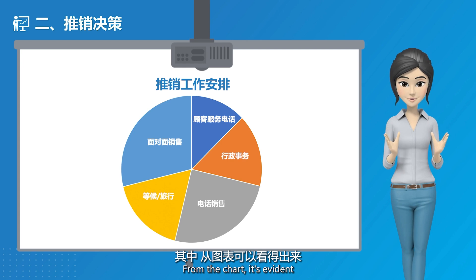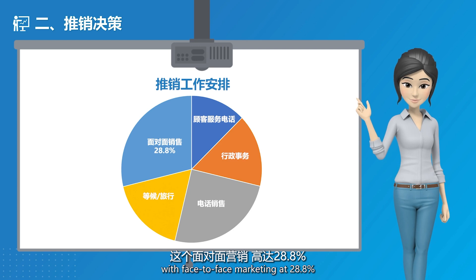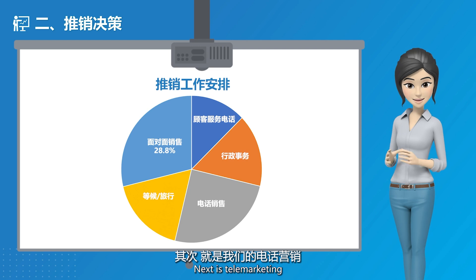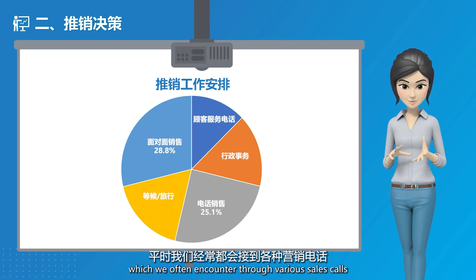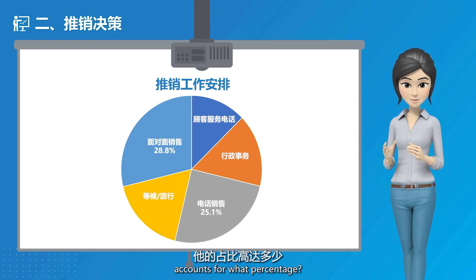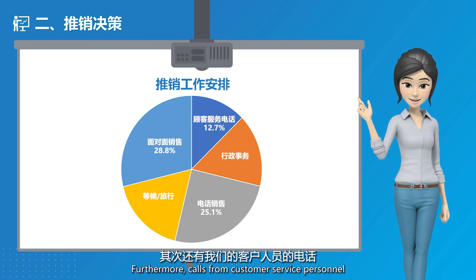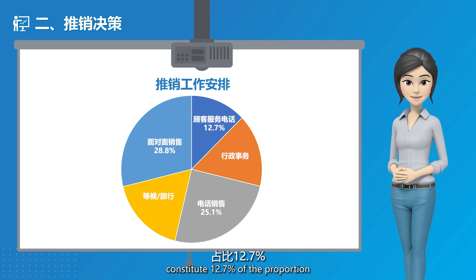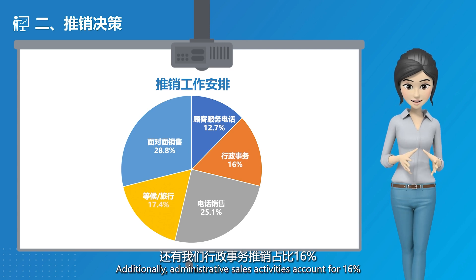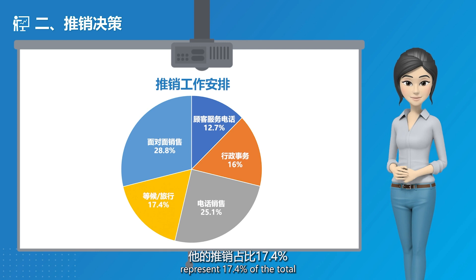From the chart, it's evident that face-to-face marketing has the largest share at 28.8%. Next is telemarketing — which we often encounter through various sales calls for real estate, renovations, etc. — accounting for 25.1%. Calls from customer service personnel constitute 12.7%, administrative sales activities account for 16%, and sales activities during waiting or travel represent 17.4% of the total.